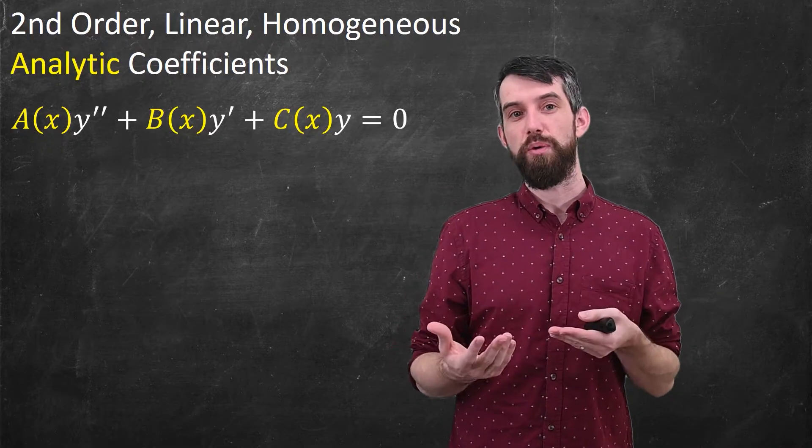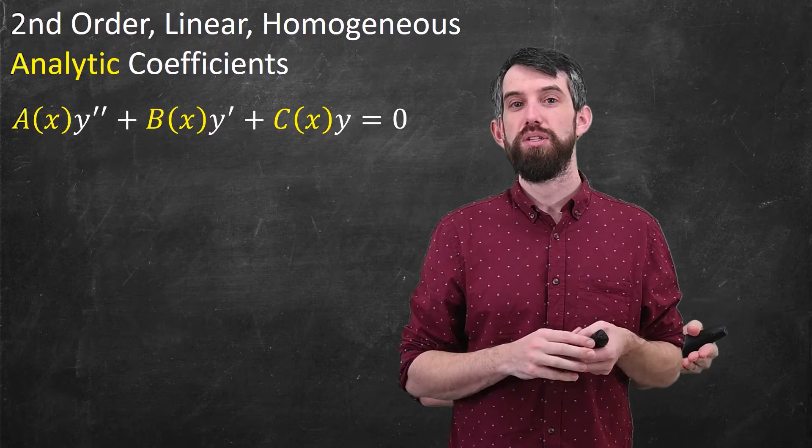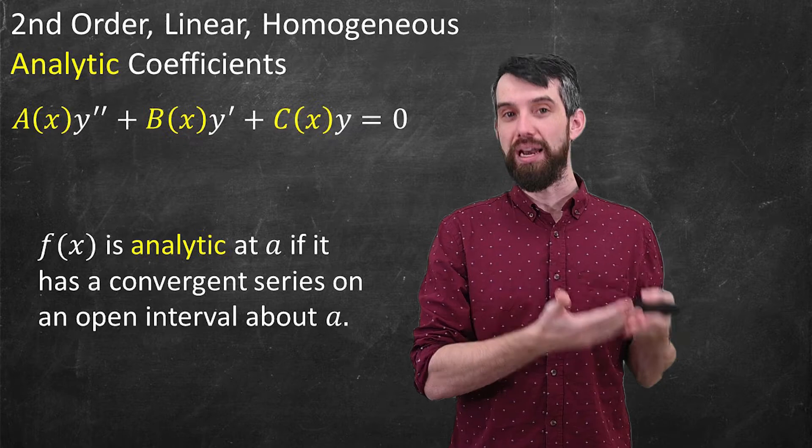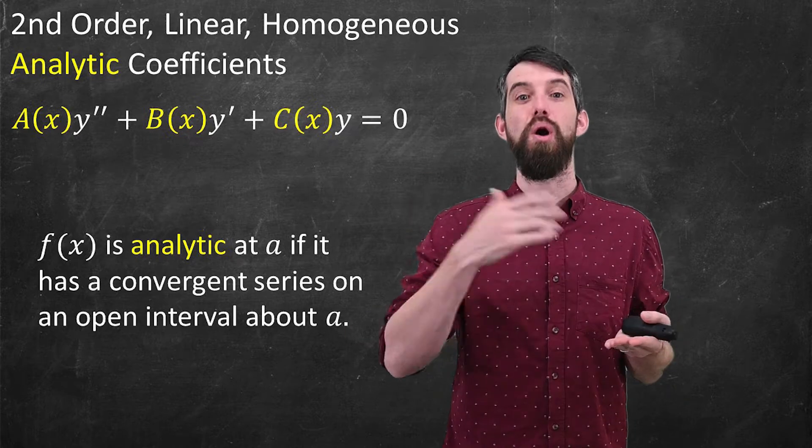Homogeneous because it's equal to zero on the right side, but the new word for us, perhaps, is analytic. So a function is defined to be analytic on some interval if it has a convergent power series on that particular interval.